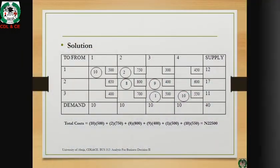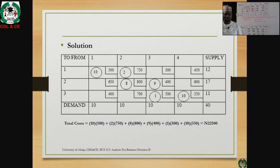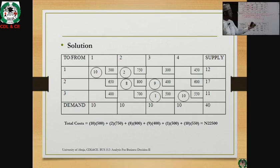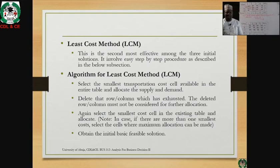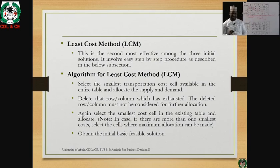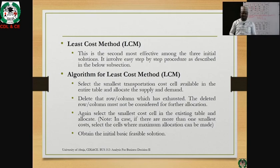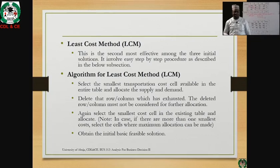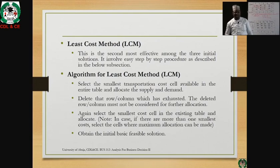Now let's move to the second initial solution: the least cost method. We look at the entire cost matrix and start allocating to the cells with the minimal cost, then move to the next minimal cost. The algorithm: select the smallest transportation cost available in the entire table, allocate the supply and demand, delete the rows and columns which have been exhausted, then again select the smallest cost cell in the remaining table and allocate.